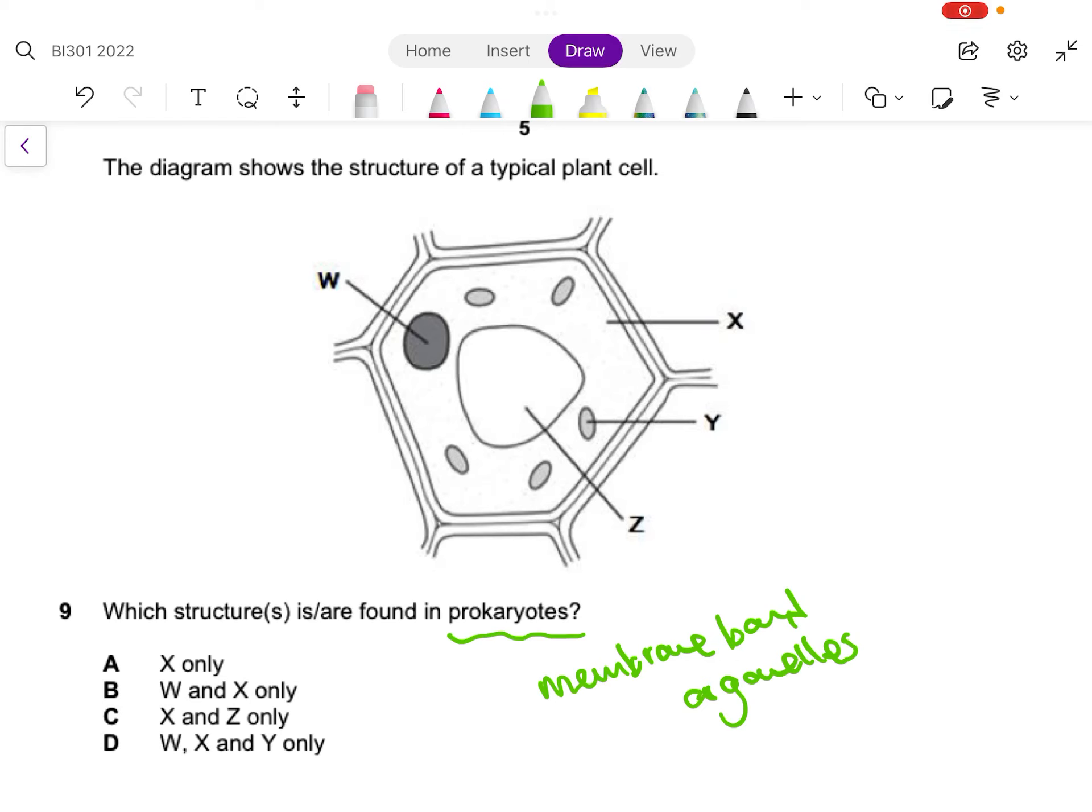So first and foremost, it should have X. X is the cytoplasm, so it should have at least X. What is Y? Y are likely chloroplasts inside the plant. Chloroplasts have membranes, so anything with Y cannot be the answer.